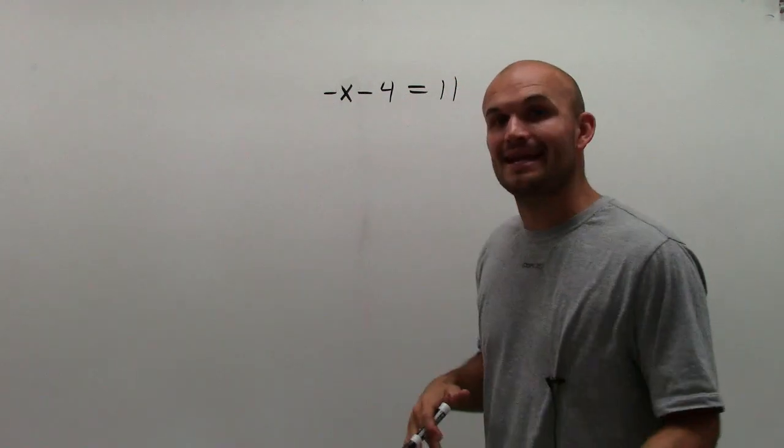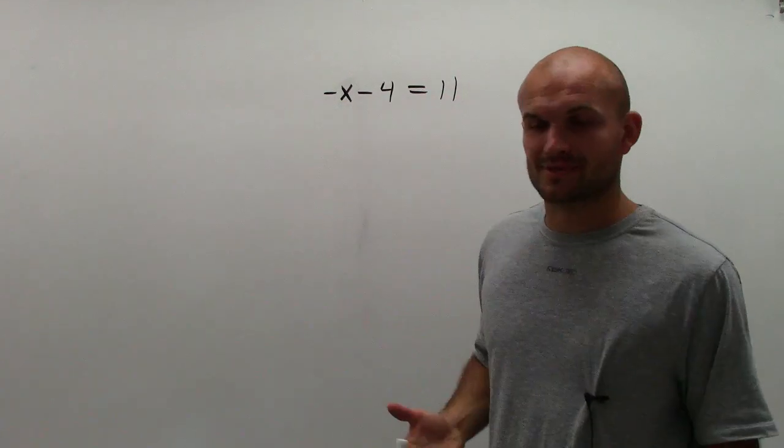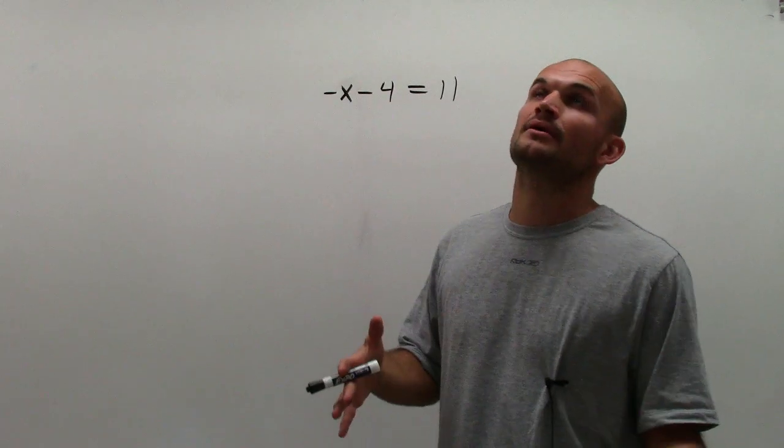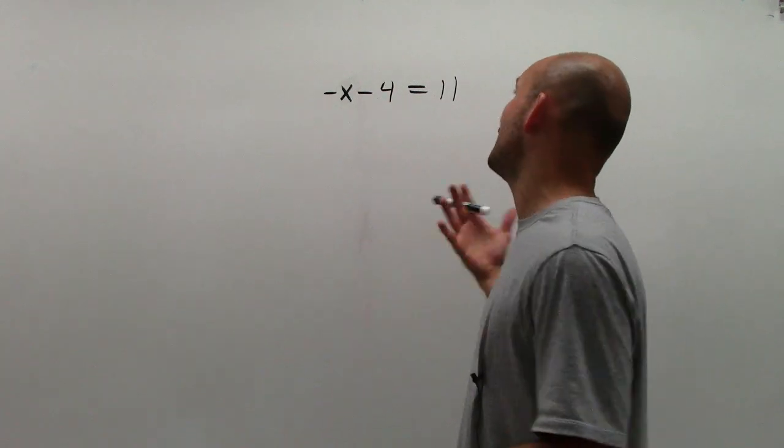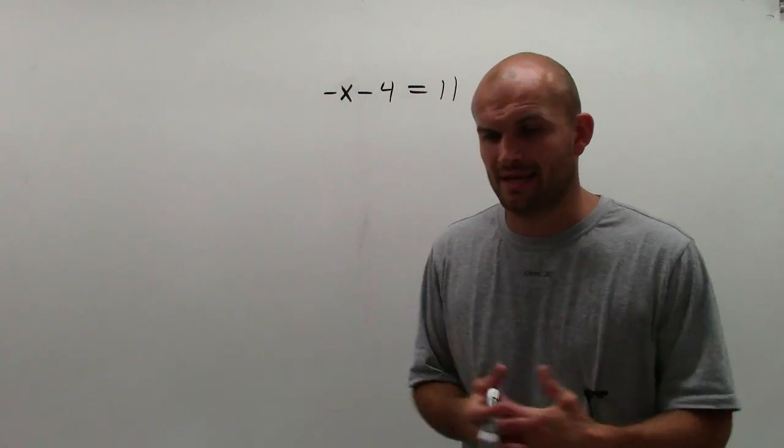So here the problem says negative x, or the opposite of a number, minus 4 equals 11. So you can think about that in your head and say, all right, the opposite of a number minus 4 is going to equal 11. And it might be a little confusing thinking of the opposite or the negative.